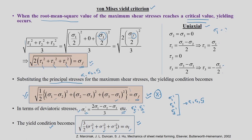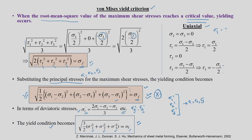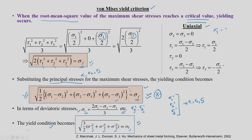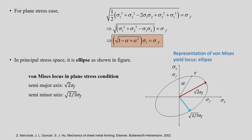Tresca and von Mises yield conditions have different statements, but both tell you when the material is going to yield. The predominantly used equation involves principal stresses sigma_1, sigma_2, sigma_3, and sigma_f is the yield strength of the material.